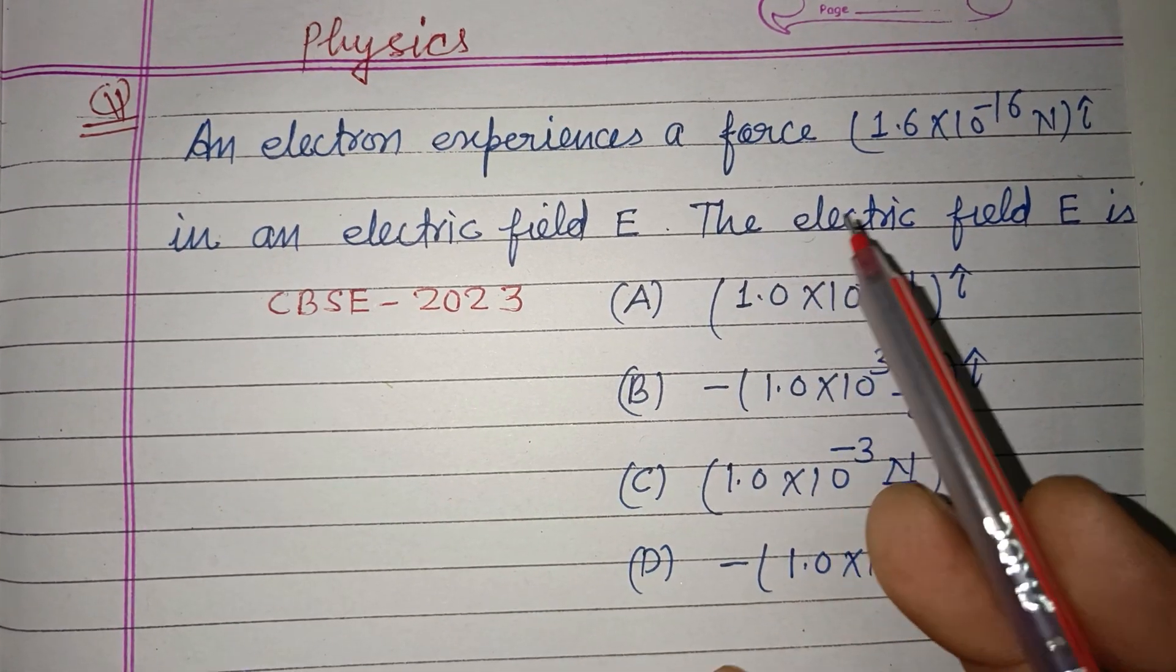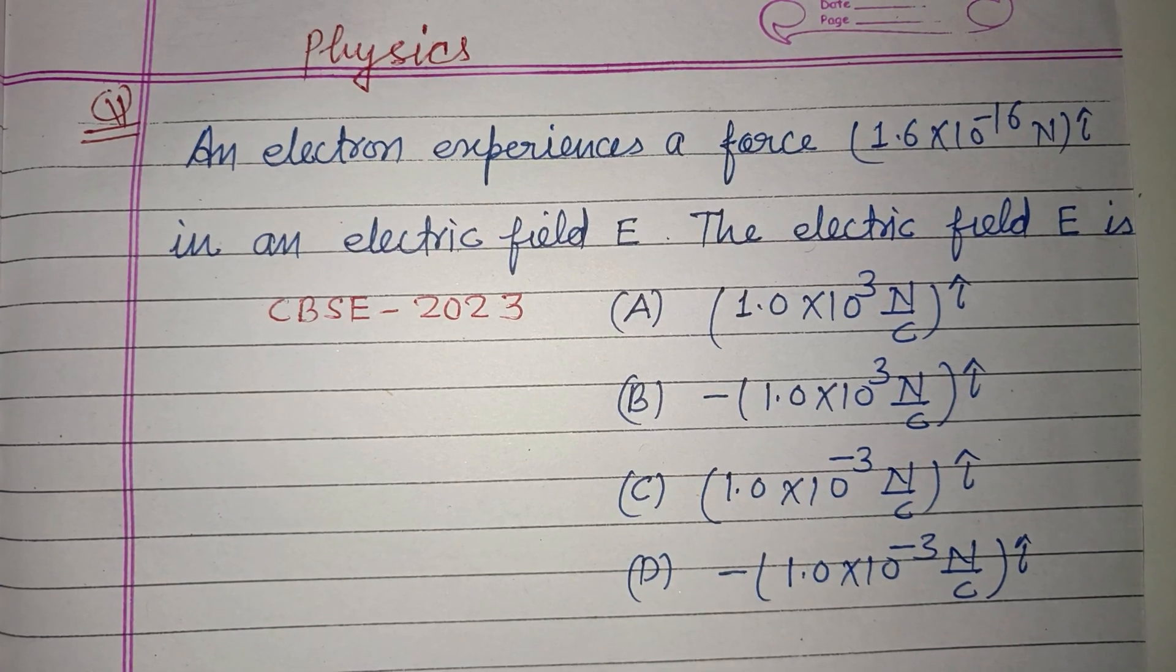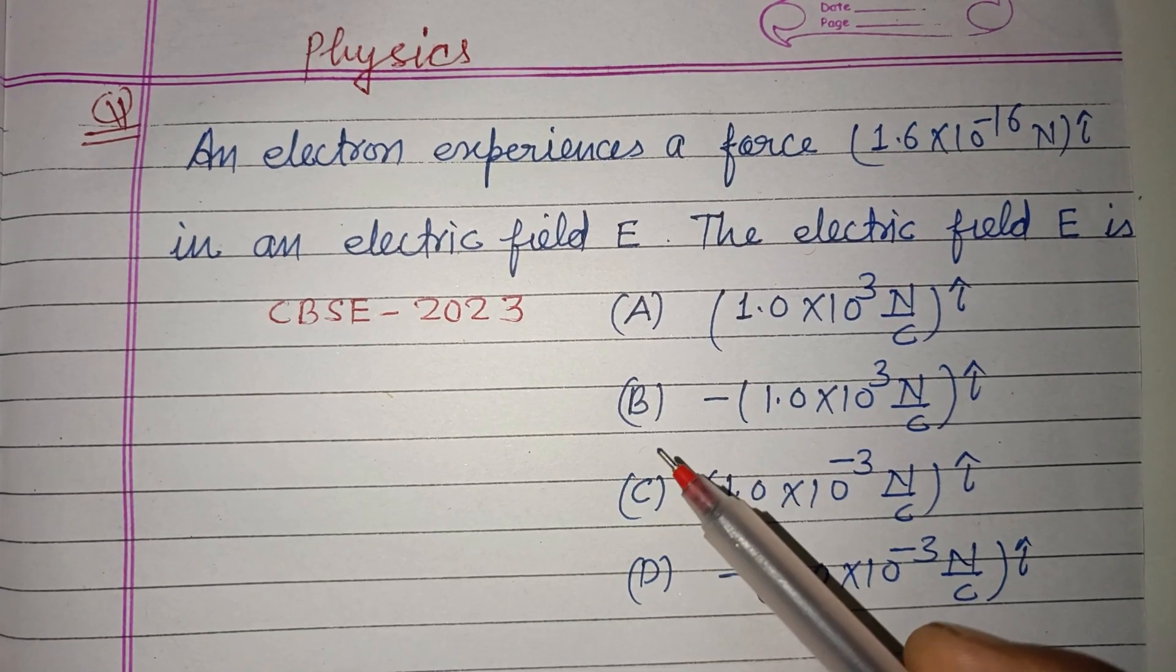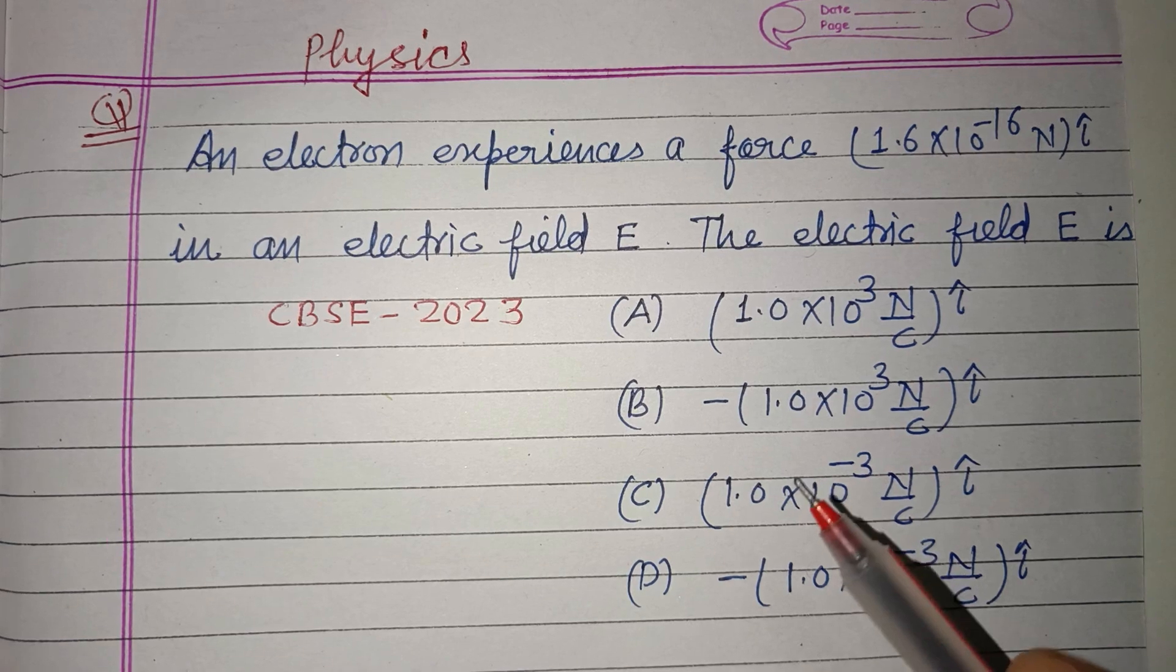An electron experiences a force of 1.6×10^-16 Newton î in an electric field E. The electric field E is: